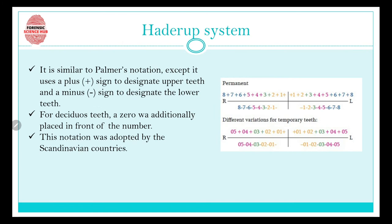Now let's move on to the Haderup system, which is very similar to the Palmer notation with only one difference: a plus and minus sign is used to designate the upper and lower jaws. In the Palmer system we used four unique symbols, but in the Haderup system we use plus and minus signs instead.